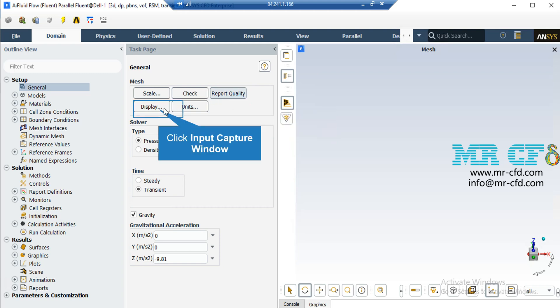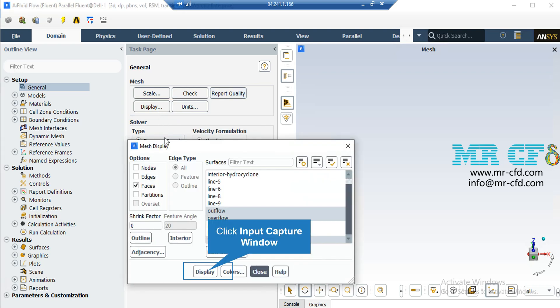By clicking on the display button, a new window will appear which you can see different parts of your geometry. In the appeared window, which shows you the names of the different parts of your geometry, you can click and select each part and then click on display, so that the software will show you that part.